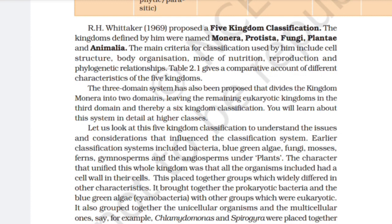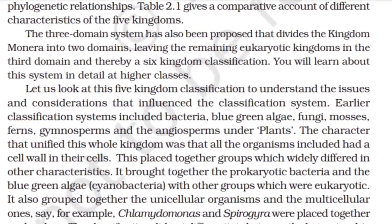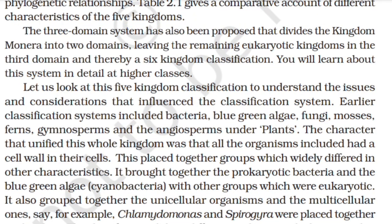The three-domain system has also been proposed, which divides the kingdom Monera into two domains, leaving the remaining eukaryotic kingdoms in the third domain — thereby giving a sixth kingdom classification. You will learn about this system in detail in higher classes. Let us look at this five kingdom classification to understand the issues and considerations that influence classification systems.